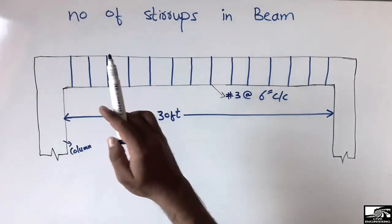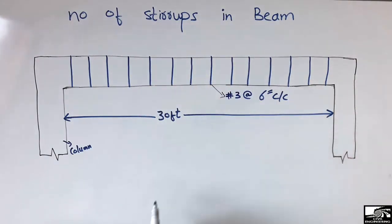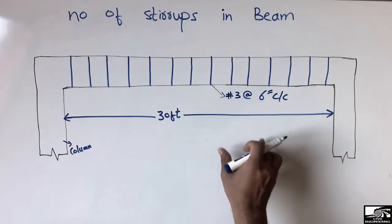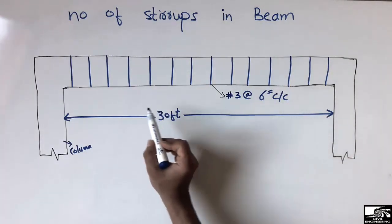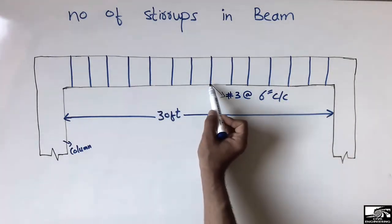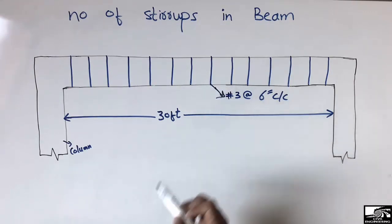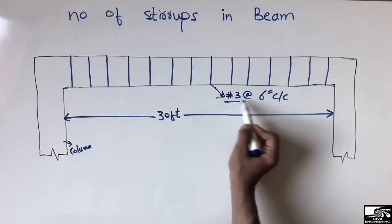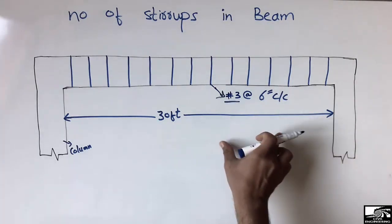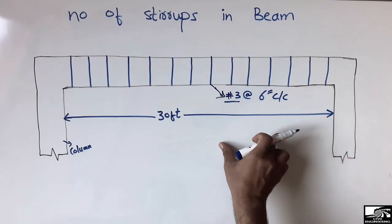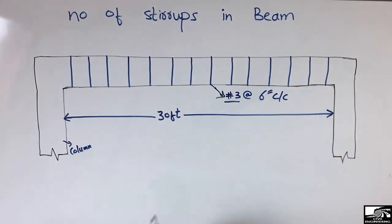We are interested to find how many stirrups are used in this beam. I just take an example to show how to calculate the number of stirrups in a beam. According to the American Concrete Institute (ACI), they use number three bars at six inches center to center. This example has been solved according to American standards.